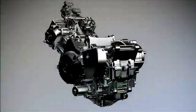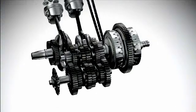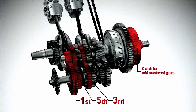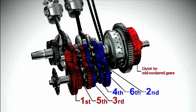The dual clutch transmission has two separate clutches for odd and even numbered gears. One for first, third and fifth gears and another for second, fourth and sixth gears.